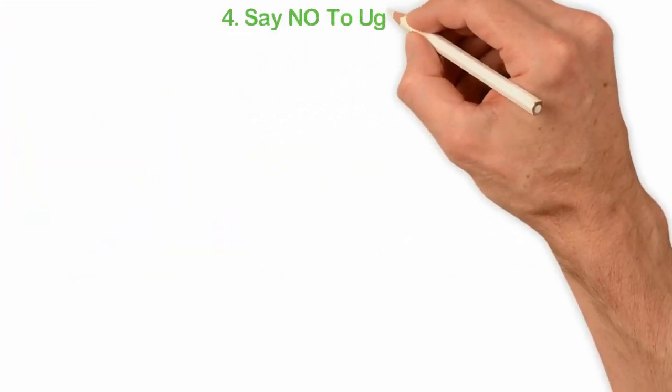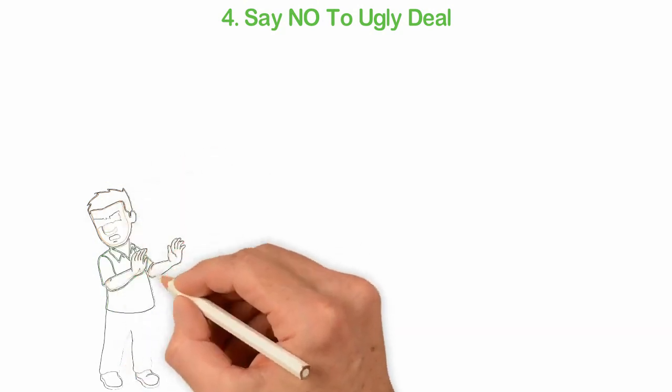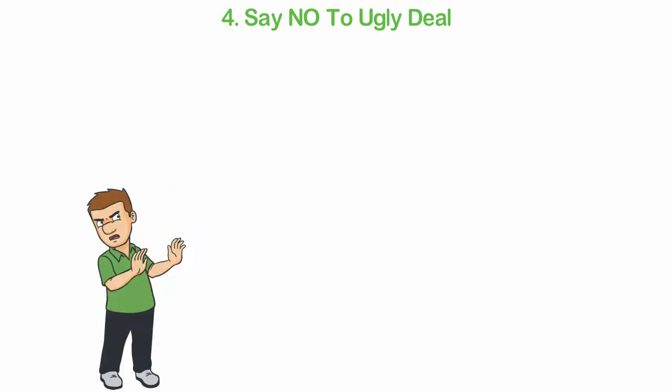4. Say no to ugly deals. This follows the point above. Since my primary goal isn't to become a billionaire, it's pretty easy for me to say no to any ugly deal even if such business deals promise to make me a lot of money.